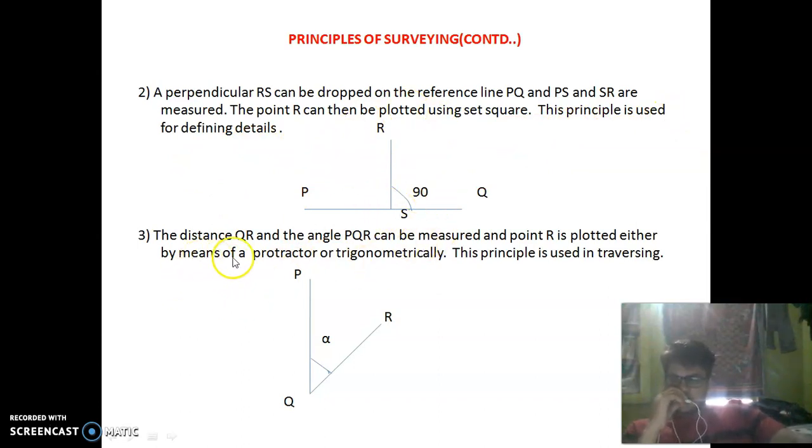Next principle: the distance QR and the angle PQR can be measured and point R is plotted either by means of a protractor or trigonometrically.